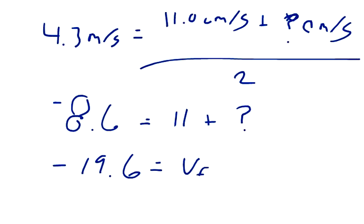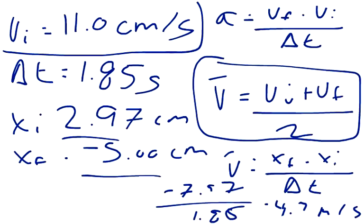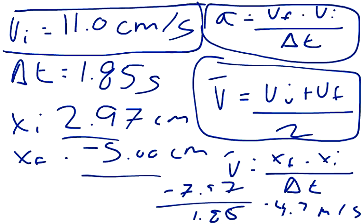Now that the final velocity is known, we can take our final velocity and our initial velocity and plug it into our acceleration formula. So negative 19.6 is the final velocity minus 11, and these are in centimeters per second,